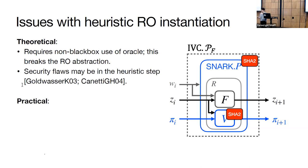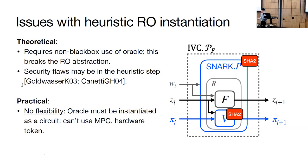There are practical concerns as well. First, we lose flexibility in the ways that we can instantiate the random oracle. The SHA2 circuit becomes part of the verifier's code, so we have to use a circuit implementation. This rules out other implementations, such as multi-party computation or using a hardware token. Another concern is the efficiency of the SNARK. SNARKs proving hash function circuits are really expensive. Recently, there are proposals for new hash functions that are more SNARK-friendly, but the community is still doing cryptanalysis on them.